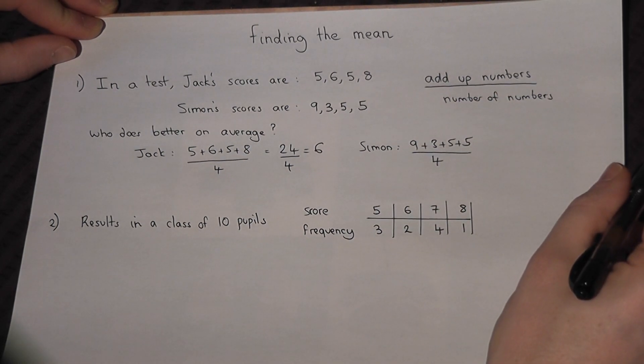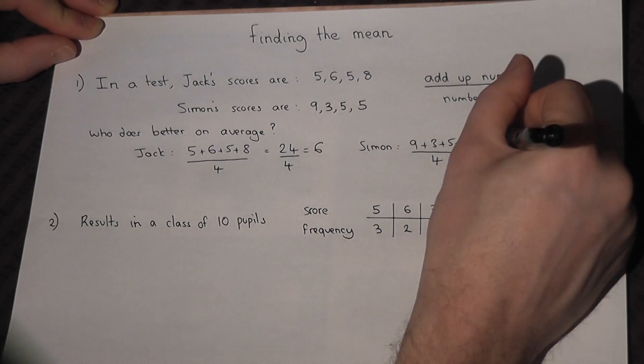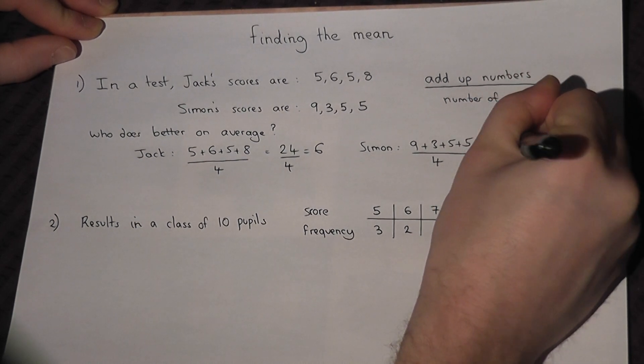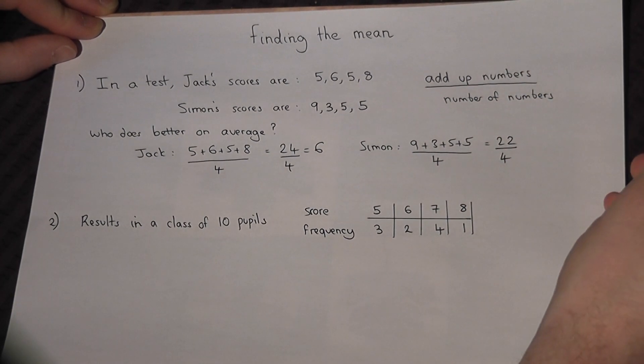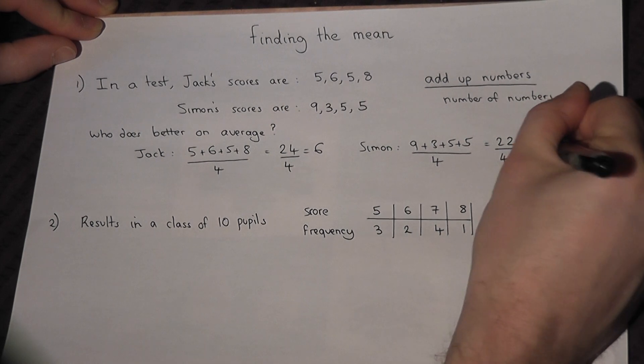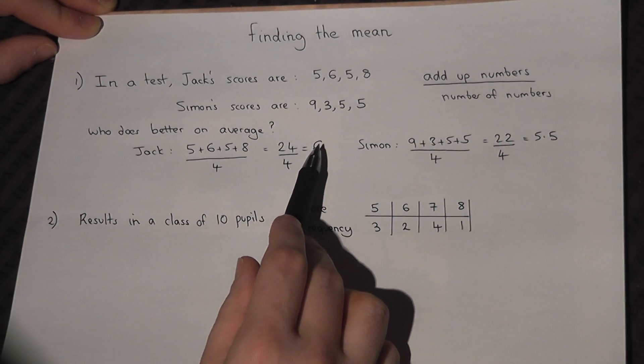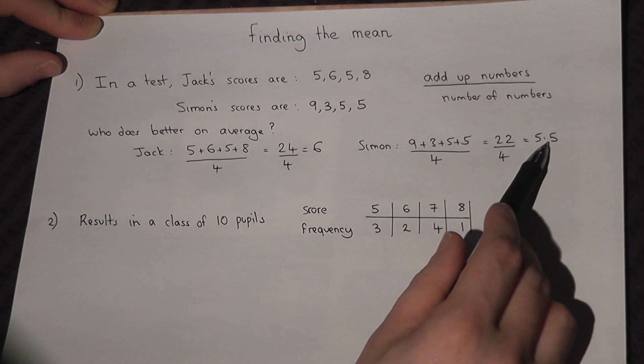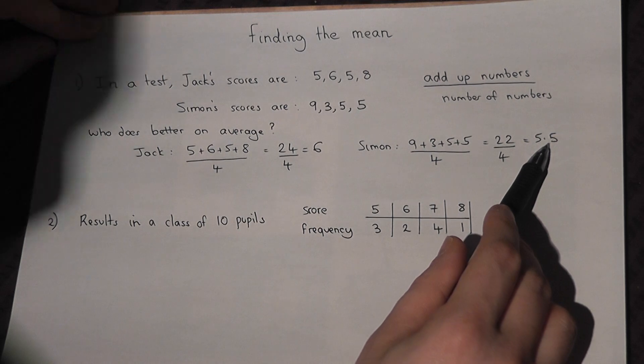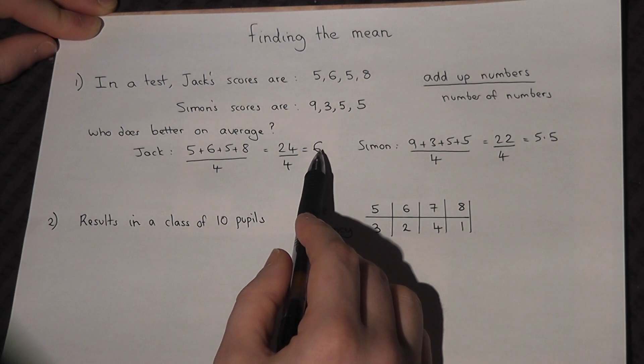9 plus 3 is 12, plus 5 plus 5 is 22, divided by 4, which is 5.5. So Jack's mean is higher than Simon's mean. So on average, using the mean, Jack does better.